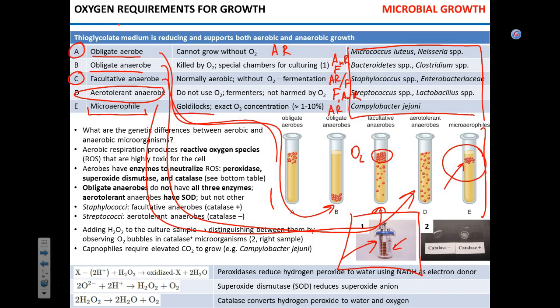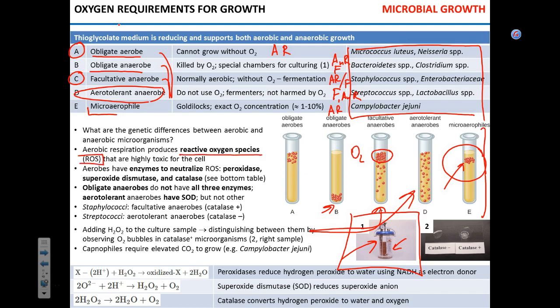We call microaerophiles 'Goldilocks' organisms — they need just the right concentration. In the presence of oxygen, cells form reactive oxygen species — chemicals like superoxide anion and hydrogen peroxide. Since bacteria produce chemicals toxic to themselves, they must have enzymes to neutralize these. Aerobic microorganisms have these enzymes; without them, oxygen exposure is lethal.